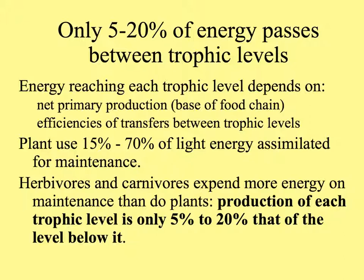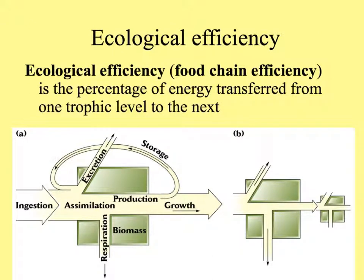In comparison, herbivores and carnivores expend even more on maintenance than plants do. So in general, the production of each trophic level is only 5% to 20% that of the level below it. Ecological efficiency, or food chain efficiency, is the percentage of energy transferred from one trophic level to the next. We can see each trophic level as a green box, with energy coming in through ingestion and assimilation, some put into production and growth, other excreted, but a large portion lost in respiration for maintenance and metabolism. Then that amount of energy goes to the next trophic level, and these compartments get smaller and smaller.